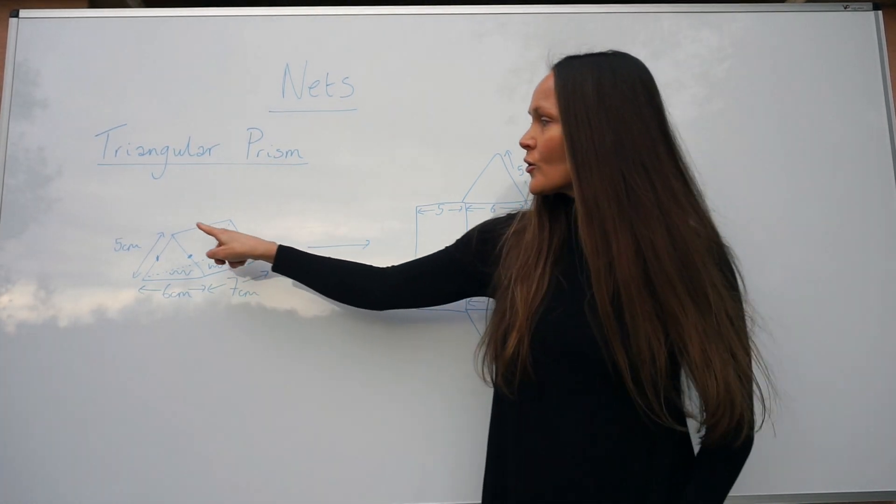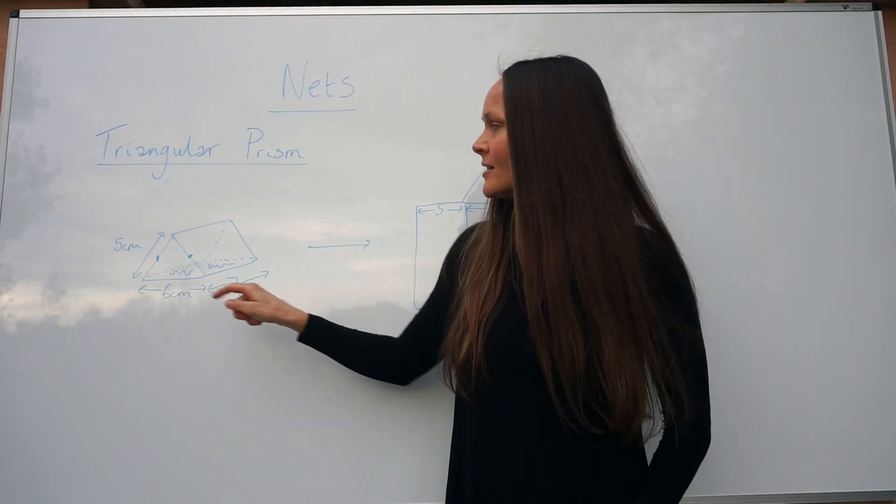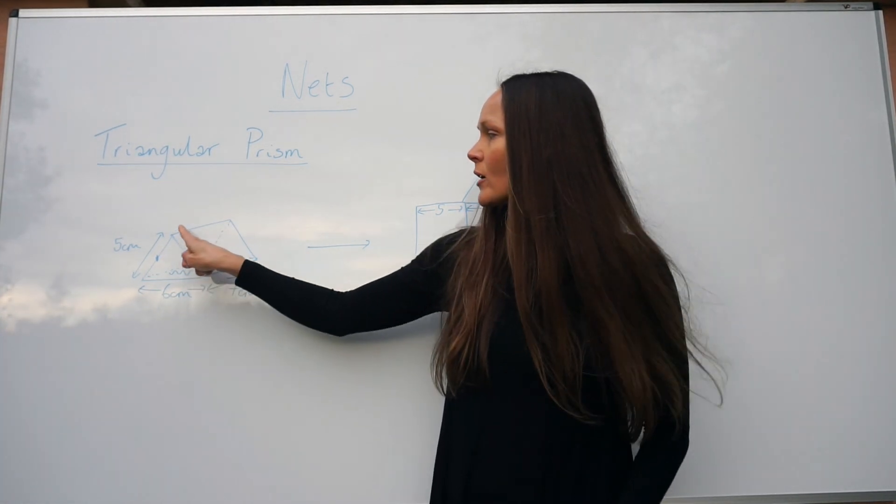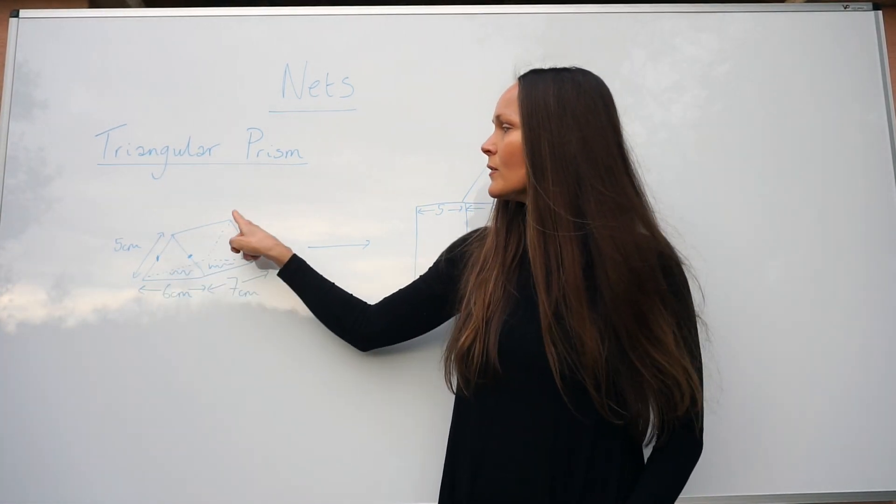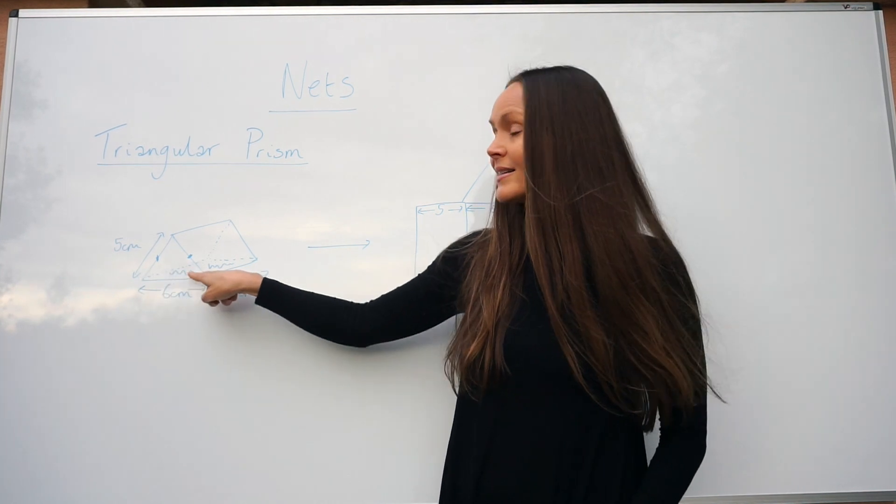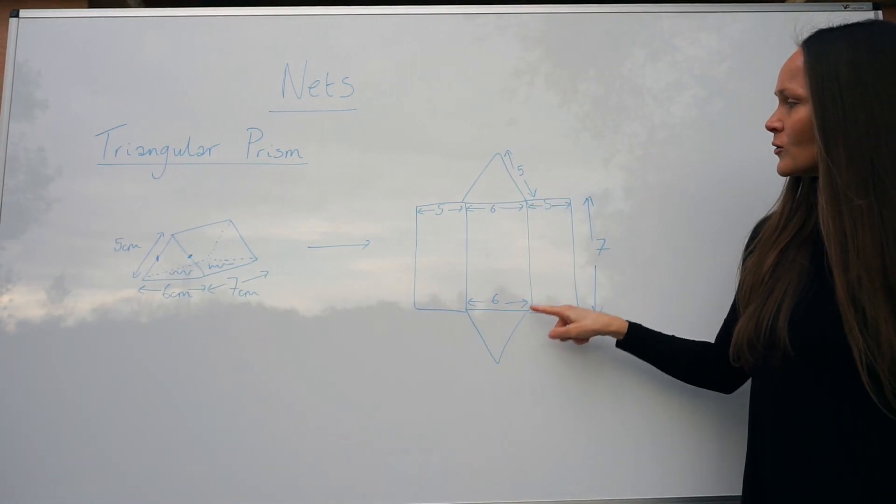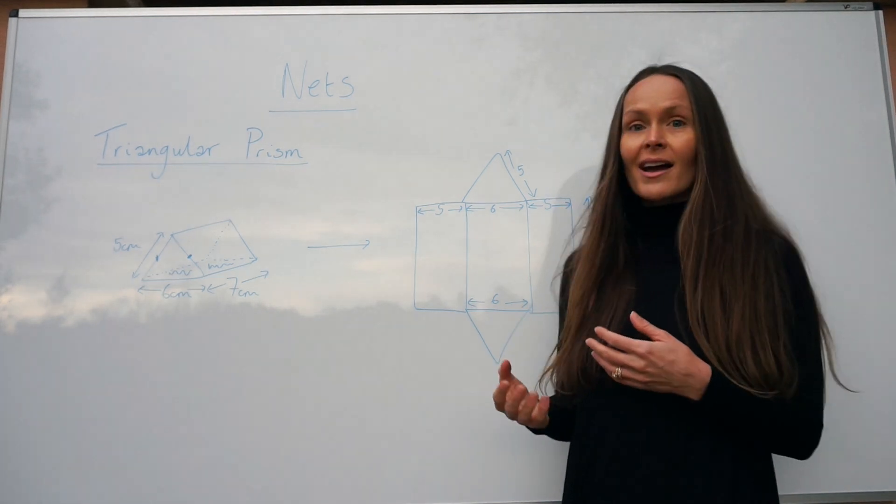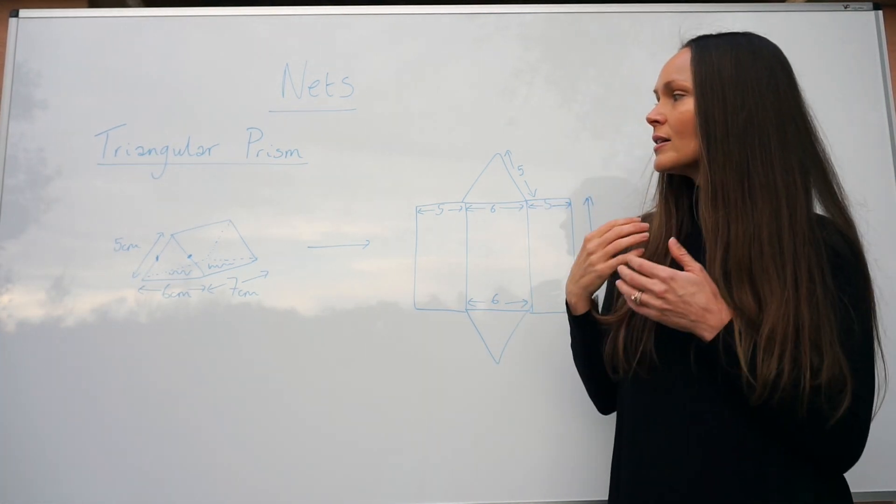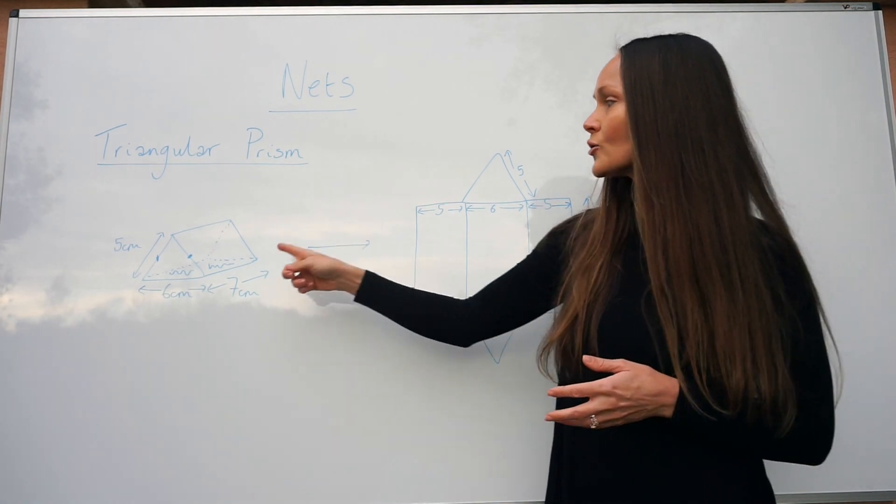Then we've got the triangles to add on at the end. Remember the isosceles triangles: these lengths are five, this one's the same, and the base is six. All that's left to do is add those on. Just do a little check at the end to make sure you've done the correct number of faces. In a triangular prism you've got five faces, and we've drawn five shapes over here.